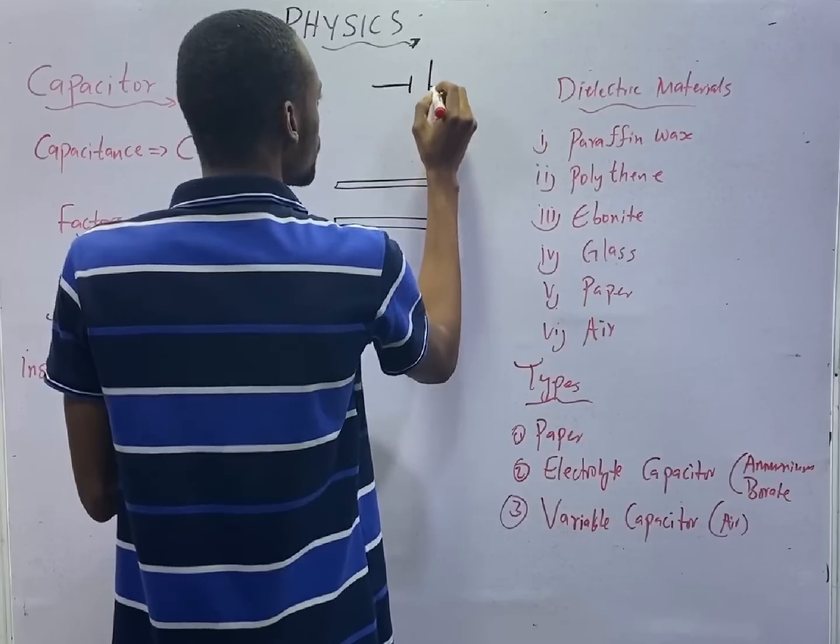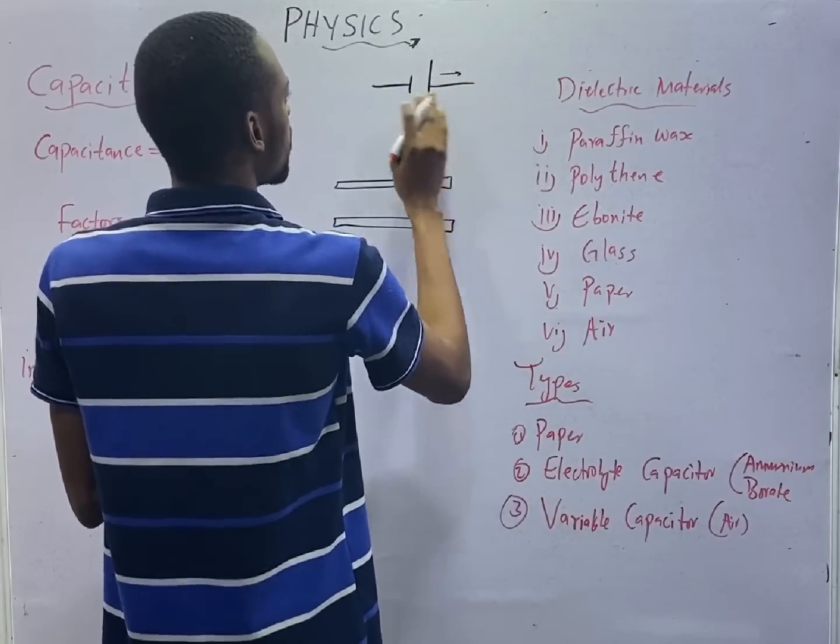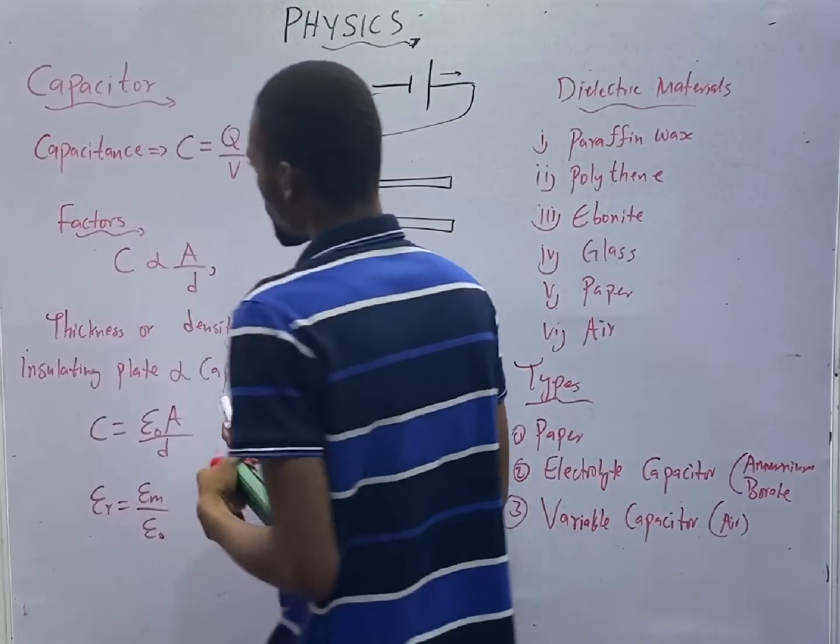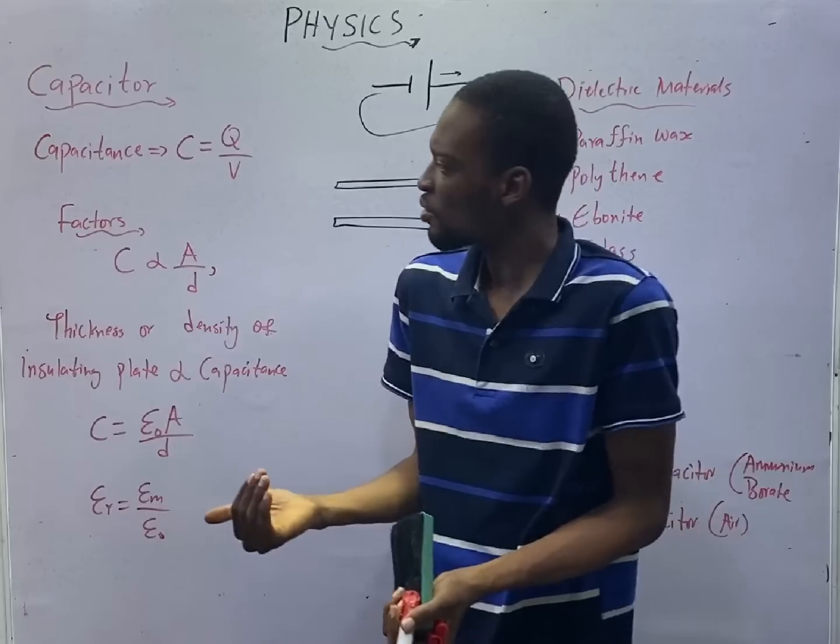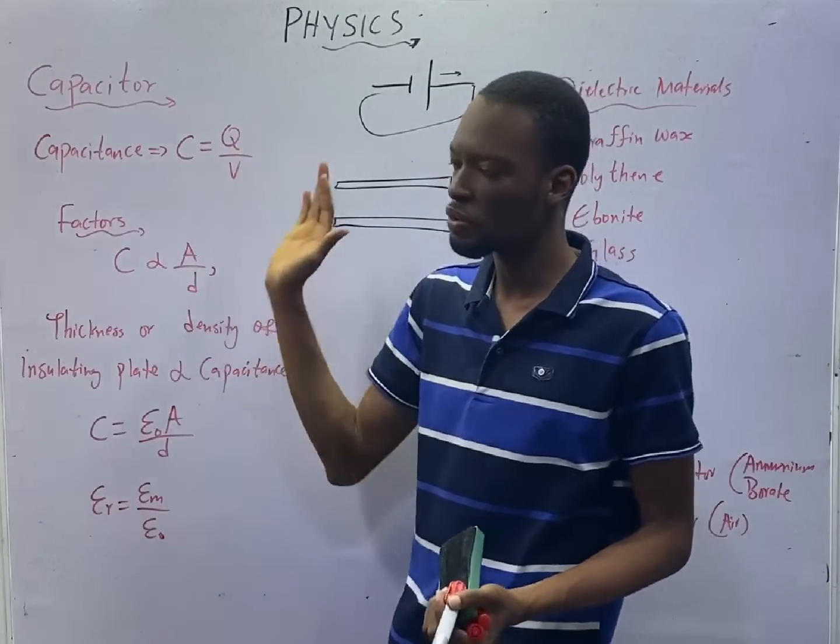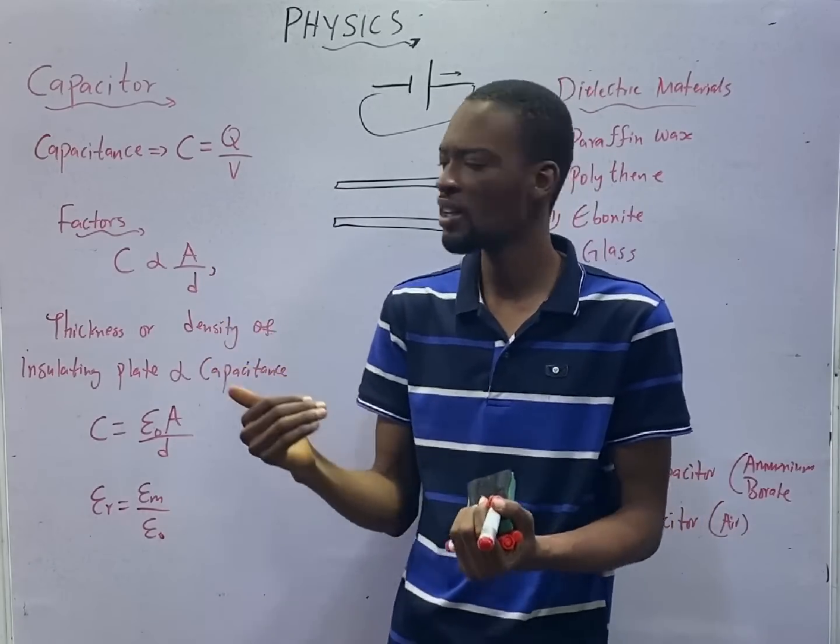If you have something like this, this is of higher potential. Current will likely flow from here to a place of lower potential. So if you are solving for the capacitance of a capacitor, you simply say Q over V, the charge you are given, divided by the potential difference.